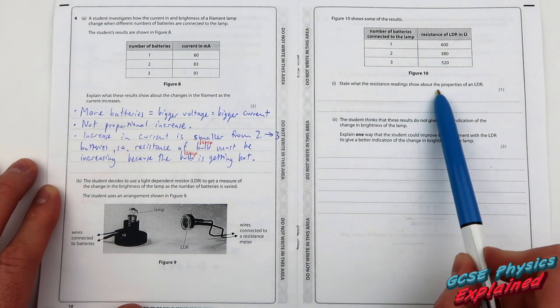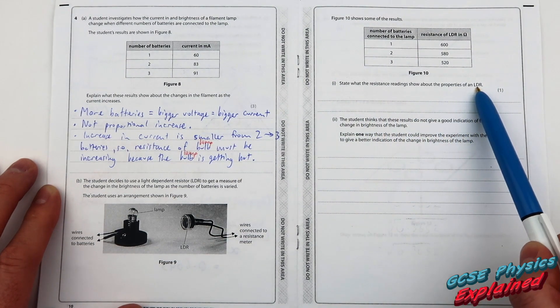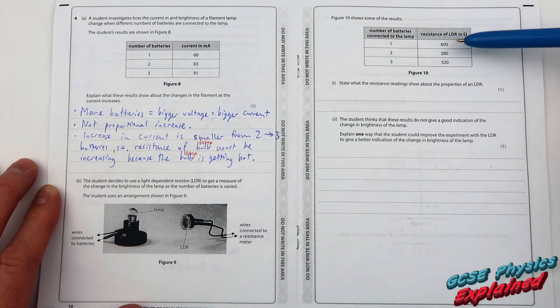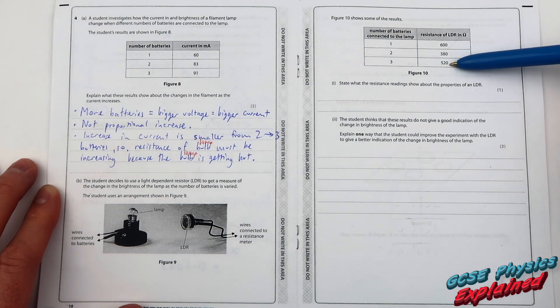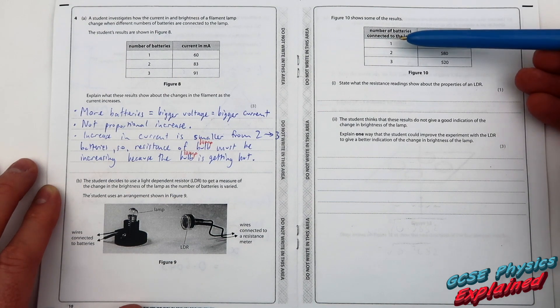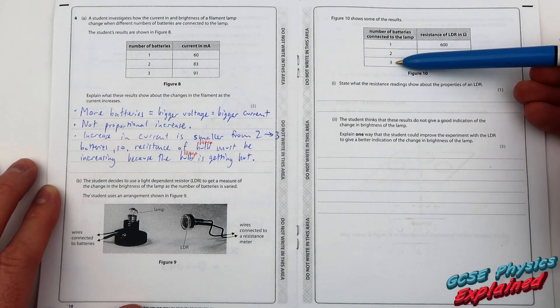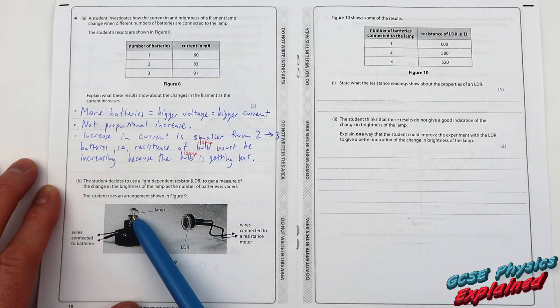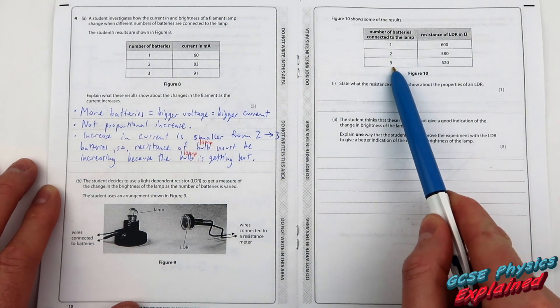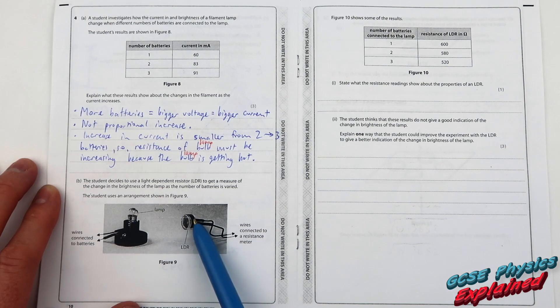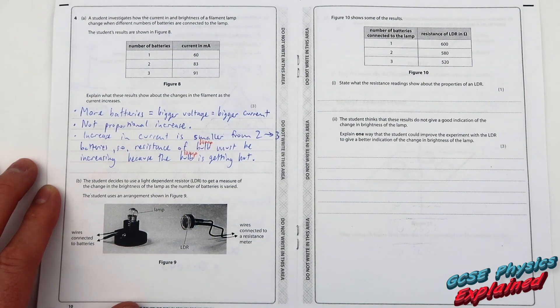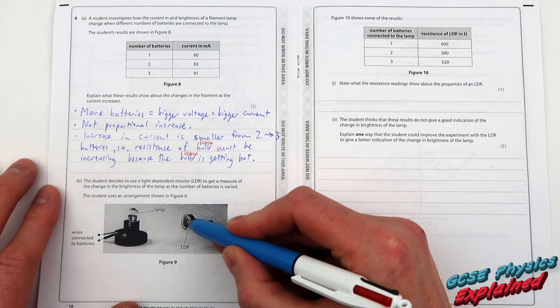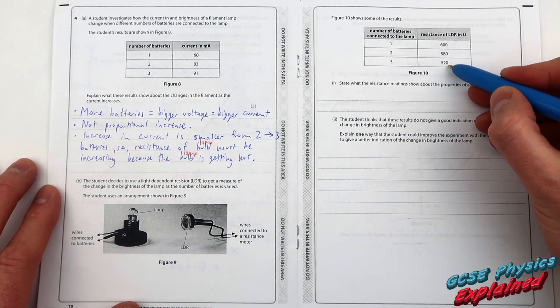State what the resistance readings show about the properties of an LDR. So an LDR, as the number of batteries get bigger, its resistance is getting smaller. Now what we can assume is that as the number of batteries is increasing, the bulb is getting more current. So the bulb is going to be brighter. So we can see more batteries cause more light, which causes the LDR's resistance to decrease. So the properties of the LDR are, as the amount of light increases, the amount of resistance decreases.